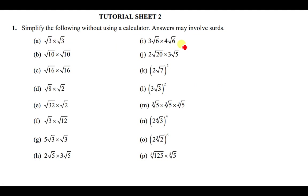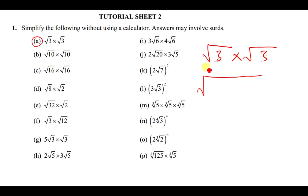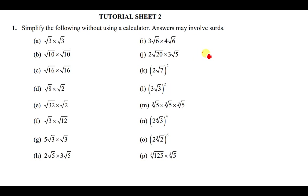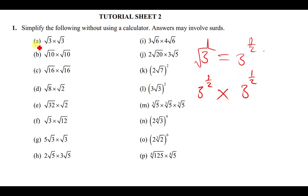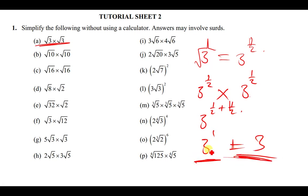Solving part a: √3 × √3. We can multiply what is under the root: √(3×3) = √9 = 3. Alternatively, using indices: 3^(½) × 3^(½) = 3^(½+½) = 3^1 = 3. Both methods give the final answer of 3.